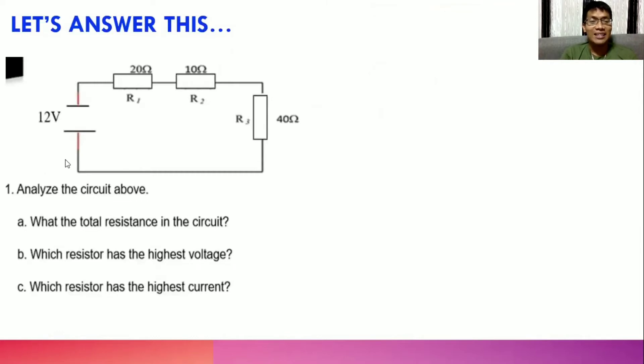For us to apply this concept, let us try to answer this problem. By analyzing the diagram, we got here three resistors: 20, 10, and 40 respectively. And the source has 12 volts. We have to determine the total resistance, which resistor has the highest voltage, and which resistor has the highest current.